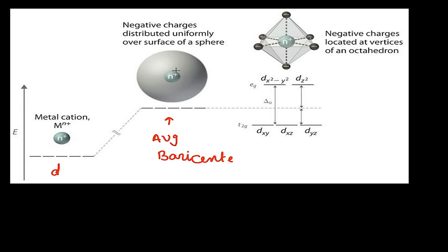As the ligands approach the central metal ion, the ligands are attracted by the metal ion but at the same time are repelled by the electrons in the d orbitals. As we have seen, dx²−y² and dz² are oriented along the axis, whereas dxy, dyz, and dzx are oriented between the axes. As a result, electrons present in dx²−y² and dz² experience more repulsion — the repulsion between the ligand electrons and the d orbital electrons is greater for dx²−y² and dz².